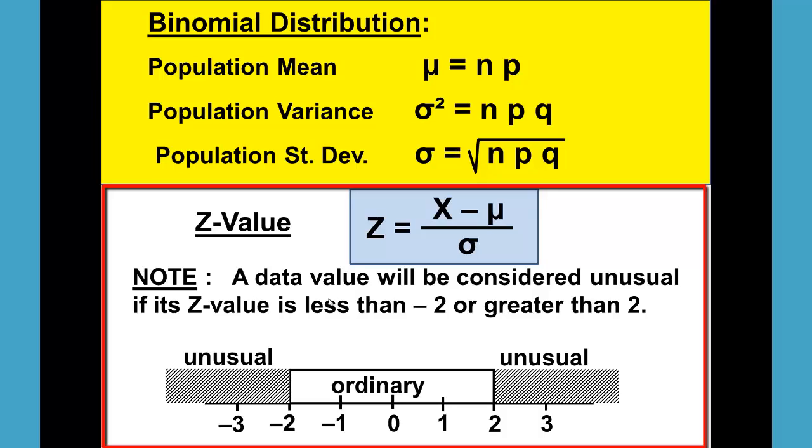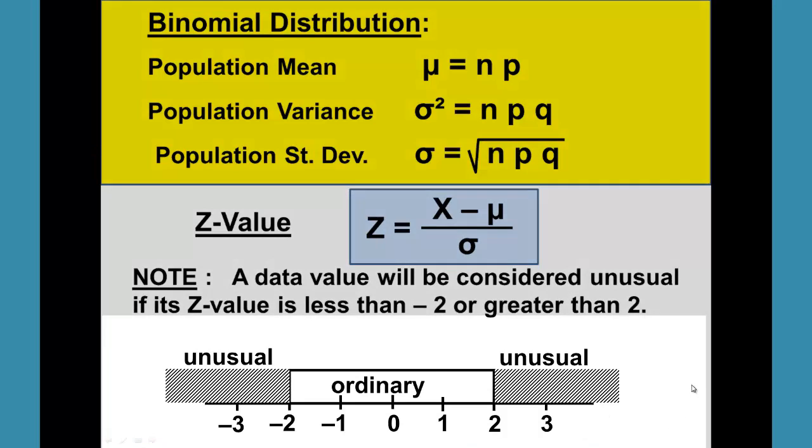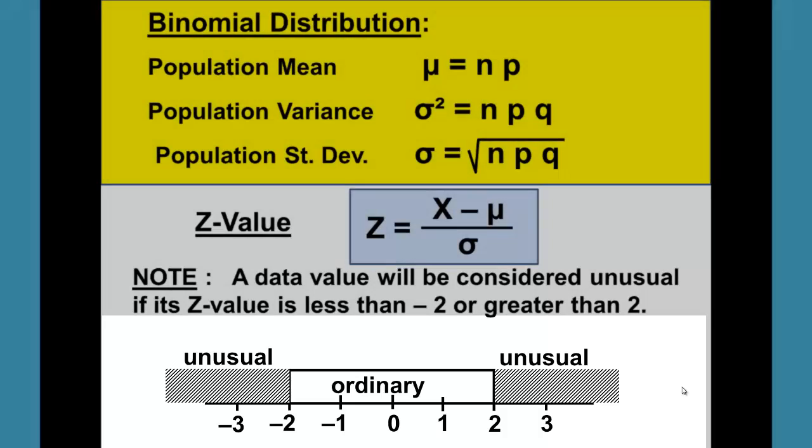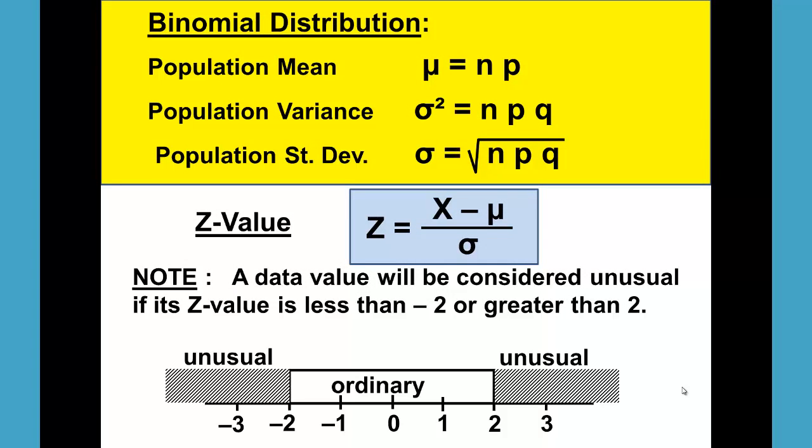In other words, if it's more than two standard deviations from the mean in either direction. Notice our number line down here. Anything inside of the two standard deviations is ordinary. Anything outside the two standard deviations is unusual if it's greater than 2 or less than negative 2.